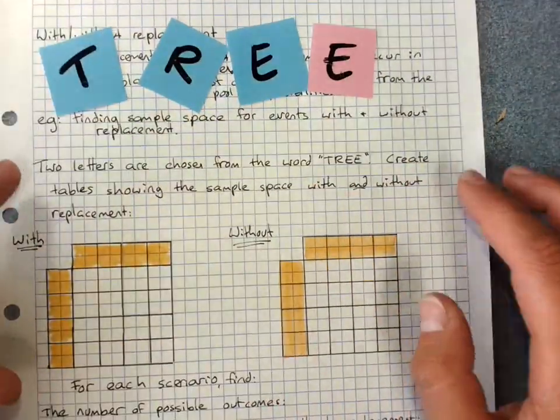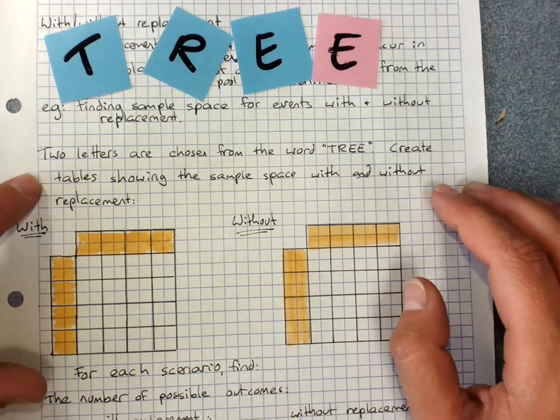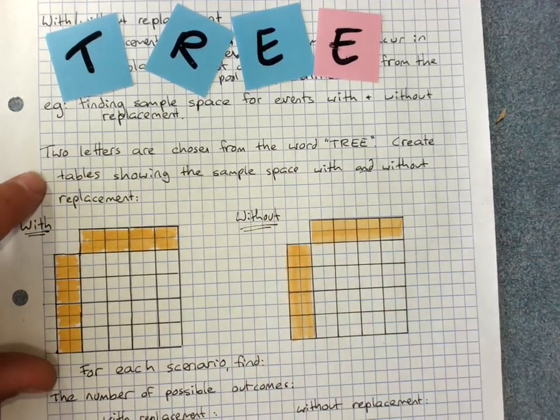Two letters are chosen from the word tree. Create tables showing the sample space with and without replacement.